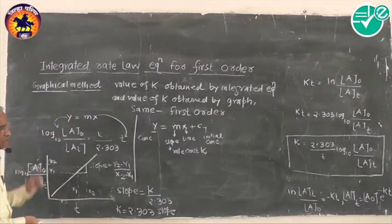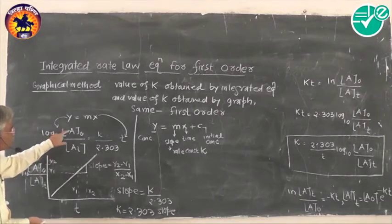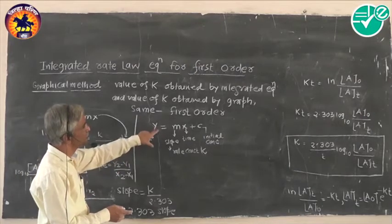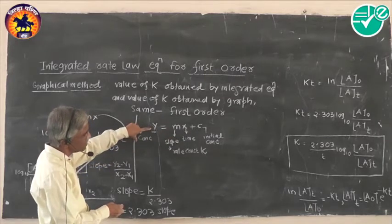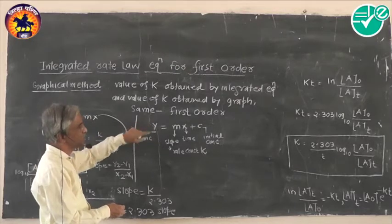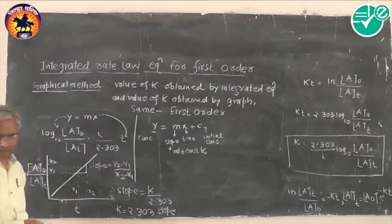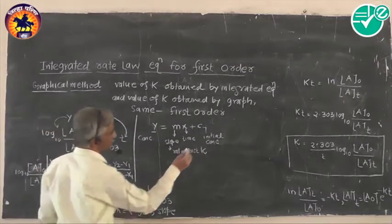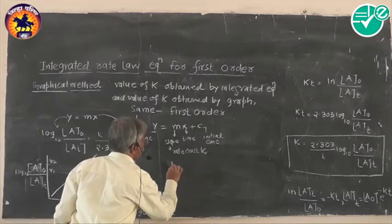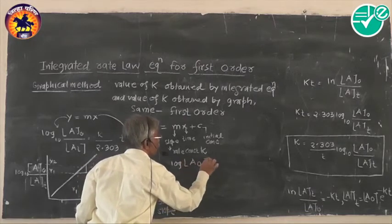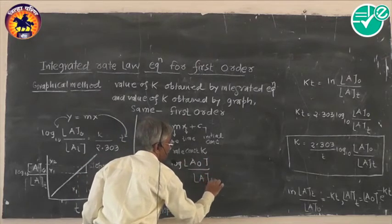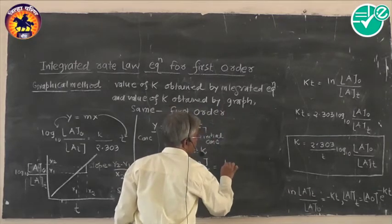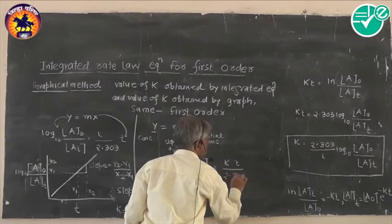This can also be calculated using a popular equation comparable to the straight line equation y = mx + c. Rewriting the equation: log(a0/at) to base 10 equals kt upon 2.303, which can also be written by expanding the log as log(a0) minus log(at) equals kt upon 2.303.